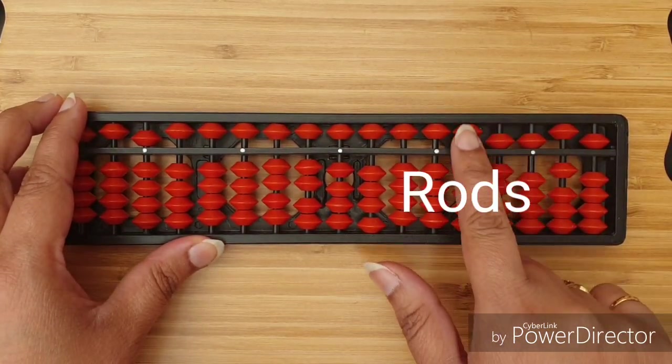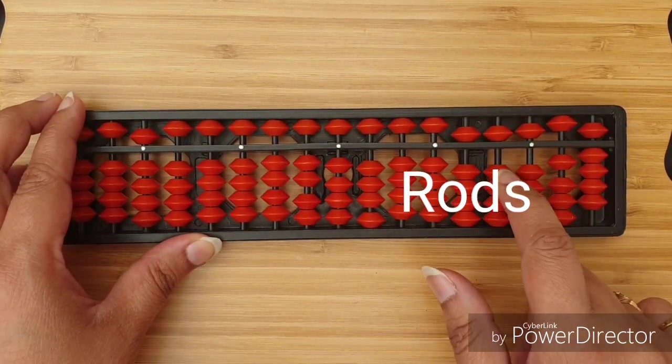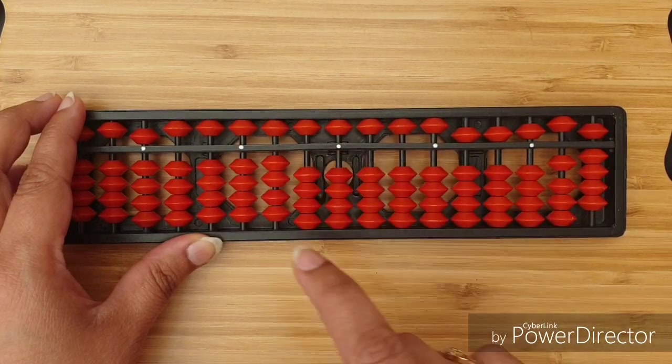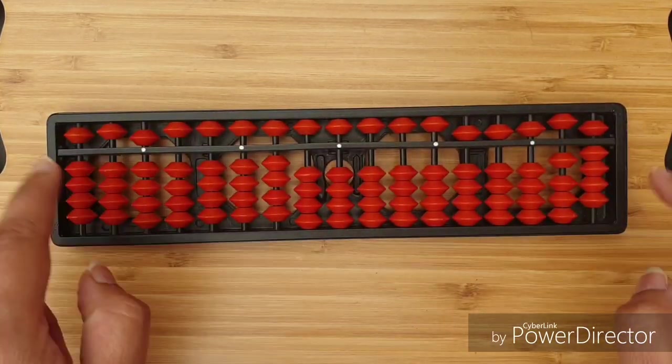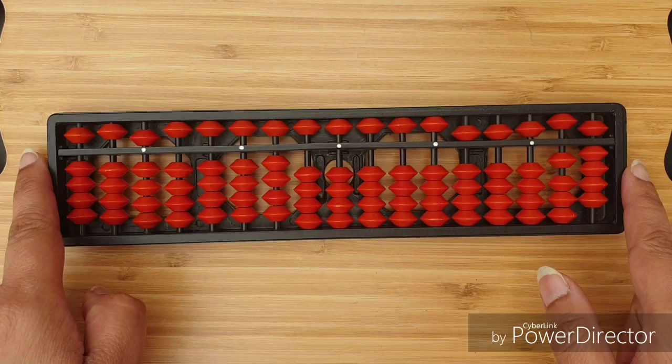These stakes holding beads are called rods of the abacus. In this abacus, we have 17 rods.